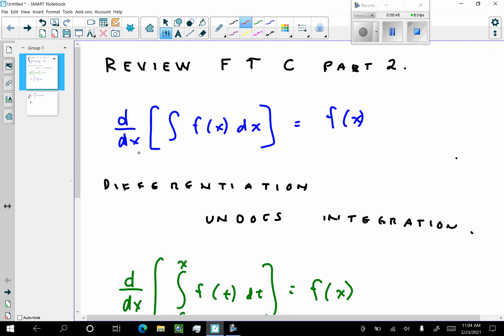So this operation here of differentiation undoes this operation here, and both of these variables would denote integration. So I have this operation here which denotes differentiation, this operation here that denotes integration, and differentiation undoes integration. So if I differentiate the integral of f(x) dx, I end up with f(x).